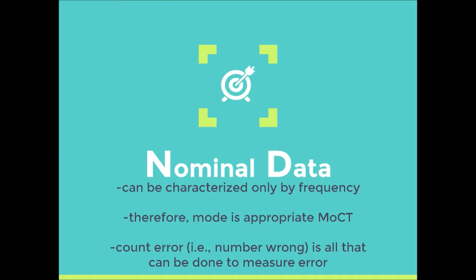I can't say what's the average major — that makes no sense. How do you get the average major? You say 2.74 — what does that even mean? Is it psychology or is it business? So in that case, all you can do is use frequency. You can't do the math with it, like we talked about in week one lectures.